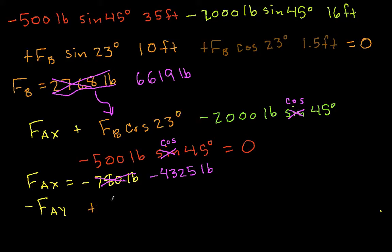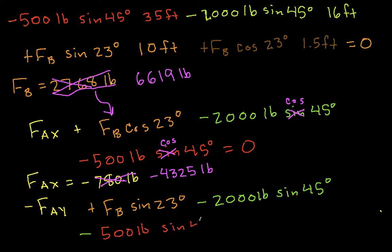Then we have the force due to the hydraulic cylinder, its vertical component, which is F_B sine 23 degrees, and then we'll have the force due to the weight of the boom itself, and the force due to the load, and this is all equal to zero.